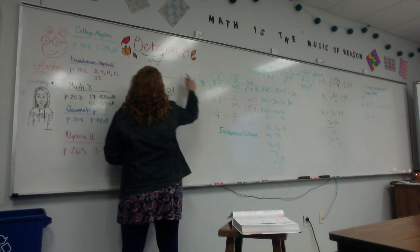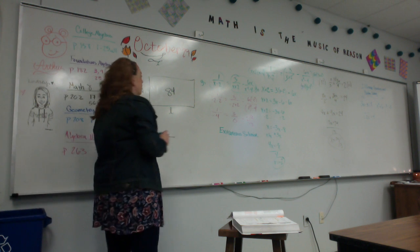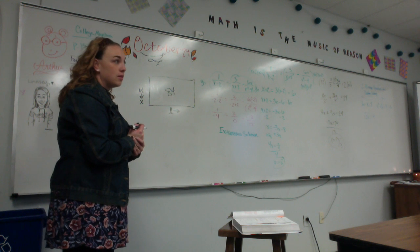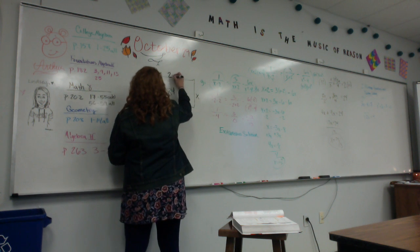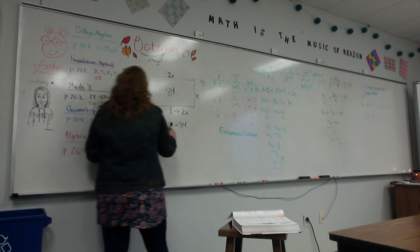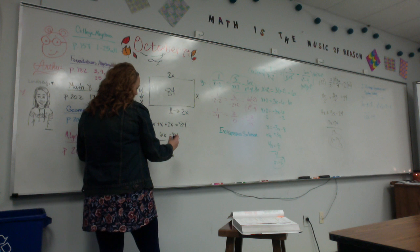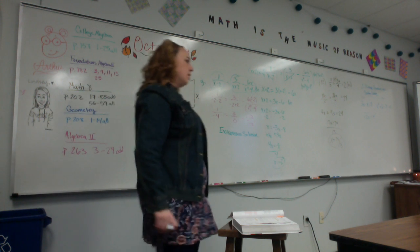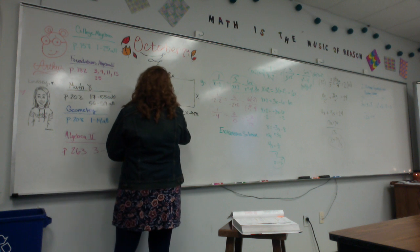Width plus length plus width plus length. So if the length is twice the width, we can let x be the width and 2x be the length. So the sides are x, 2x, x, and 2x. I'm going to add all those up and set it equal to 84. So 6x equals 84. Divide by 6, and x equals 14. My width is 14. If I double that, the length is 28. So I have a 14 by 28 kitchen — that's a big kitchen!